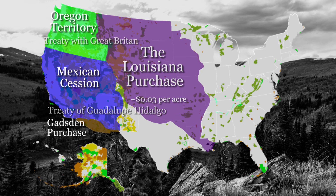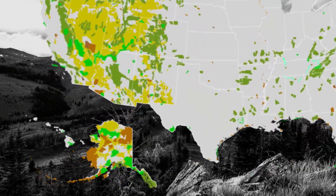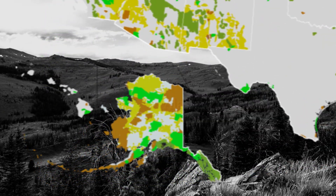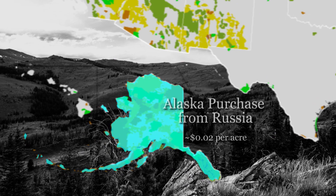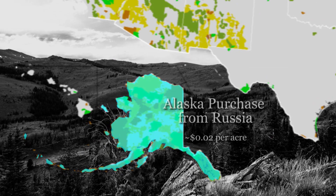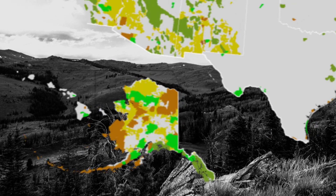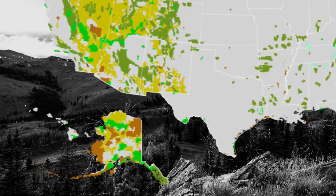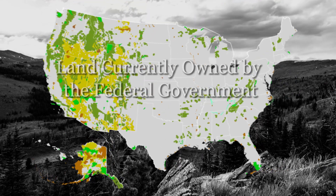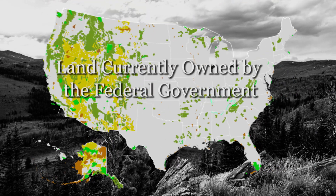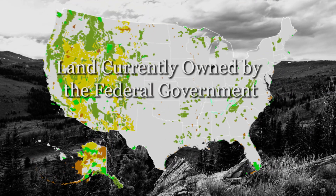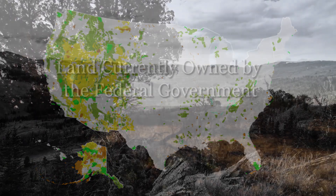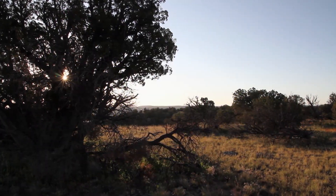As the states started becoming admitted to the Union, a lot of those lands were retained by the federal government, and the further west you go, the more land was retained by the federal government.